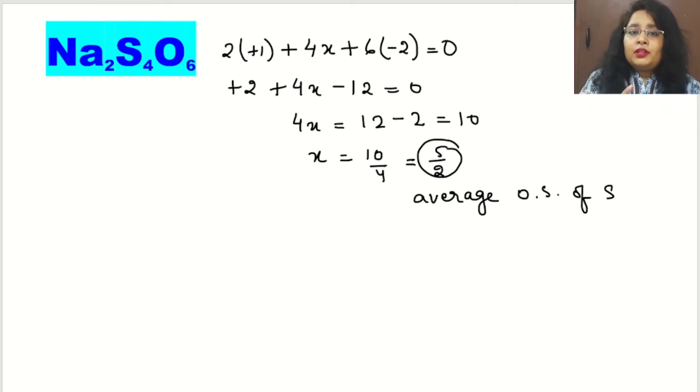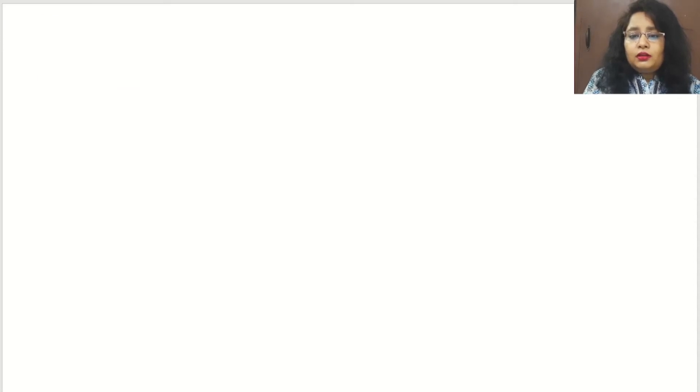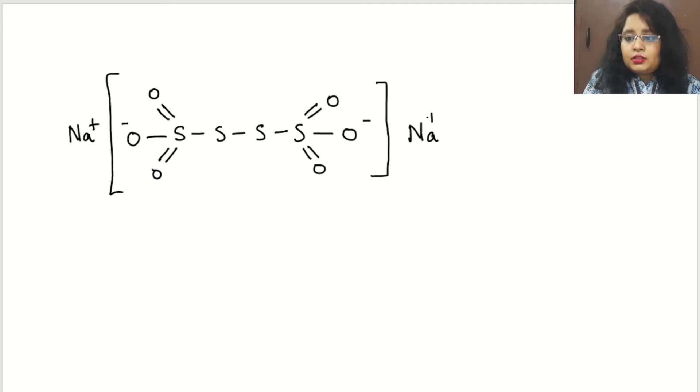Then what we will do? We will draw the structure and we will count accordingly. So first of all draw the structure. The structure should be like: it will be 4 sulfurs and they attach to the oxygen like this. Because there are 6 oxygen atoms, O, O, and O. And this oxygen will be minus charge because outside it is attached to Na⁺. So it means we can say sodium is making a bond with oxygen. So this is the actual structure.